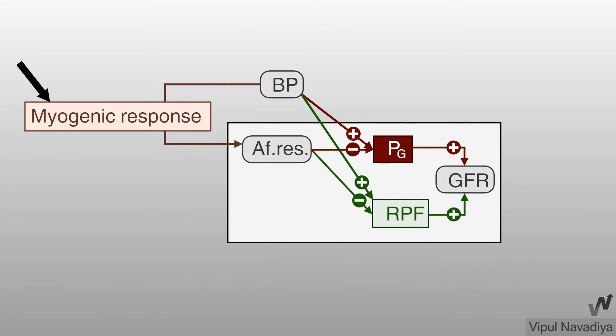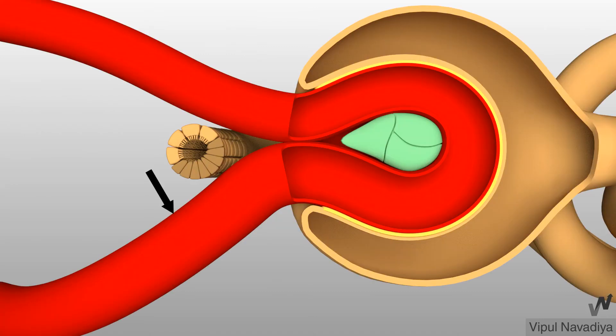Let's see myogenic regulation first. Here, changing blood pressure itself produces changes in afferent arteriolar resistance. Let's see how. It operates at afferent arteriole locally.